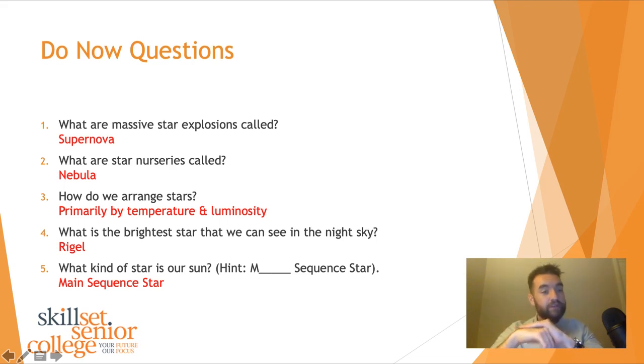How do we arrange stars? Primarily by temperature and luminosity. Temperature, how hot the star is, is what we usually classify or arrange the star. Luminosity is the scientific name for brightness. What is the brightest star that we can see in the night sky? The brightest star that we can see is called Rigel.